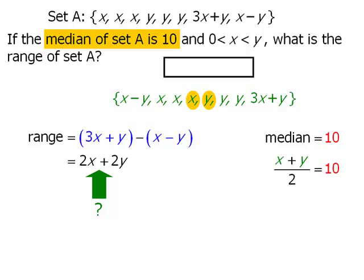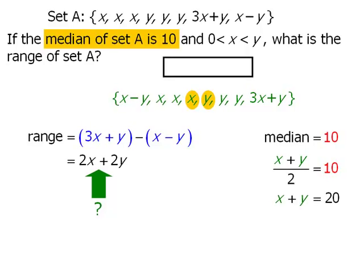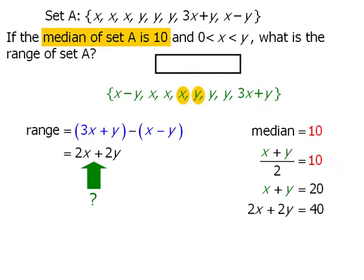From here, notice that if we take this equation and multiply both sides by 2, we get x plus y equals 20. And if we multiply both sides by 2 again, we get 2x plus 2y is equal to 40.